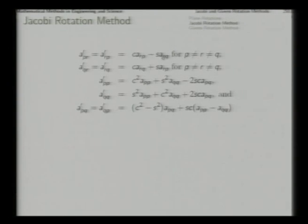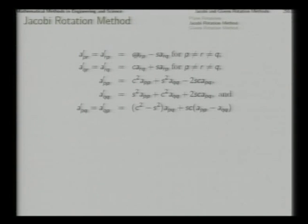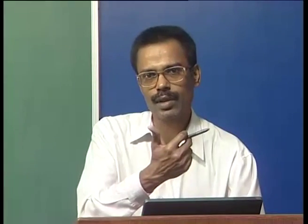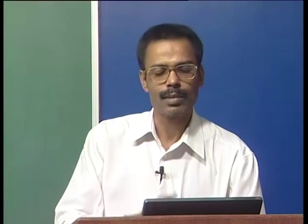If you conduct those calculations, you will find that the new elements of the matrix after transformation — elements of A-prime — have these expressions in terms of the old elements. A-rp and A-rq are the r-p and r-q elements of the old matrix A, and A-pr-prime is the corresponding element in the new matrix A-prime. These are the changes in the p-th row and column except the diagonal corner points. The result is symmetric because the original matrix A is symmetric and the transformation preserves symmetry.